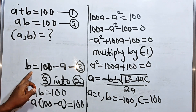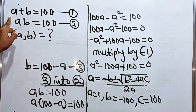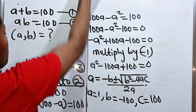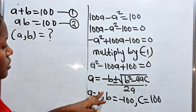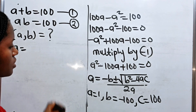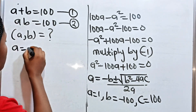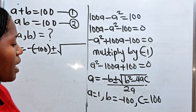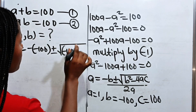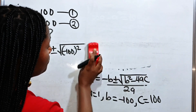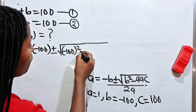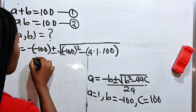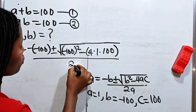So let's write it somewhere: B is equal to 100 minus A — we will come back to that. Now let's substitute. The value of A is equal to minus B, that is minus times minus 100, plus or minus square root of B squared — that is minus 100 squared — minus 4AC, minus 4 multiplied by A which is 1, and C is 100, everything divided by 2A, which is 2 multiplied by 1.